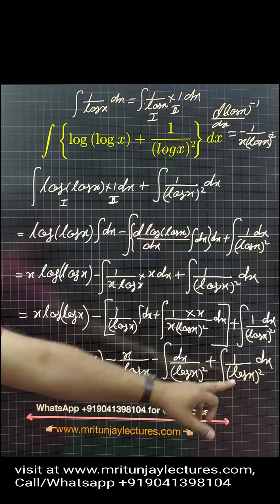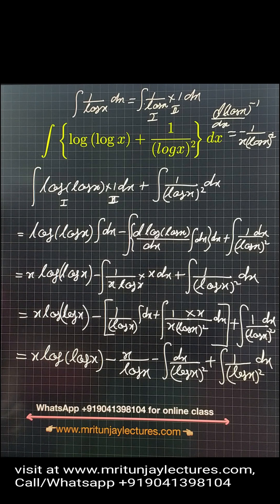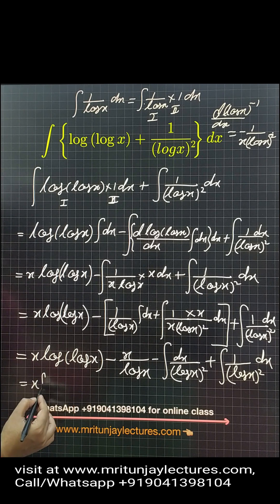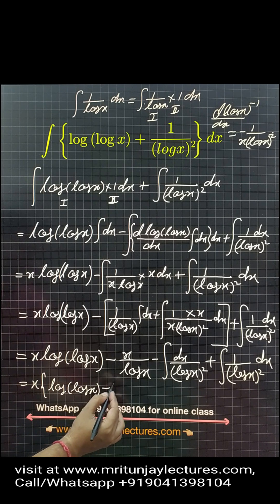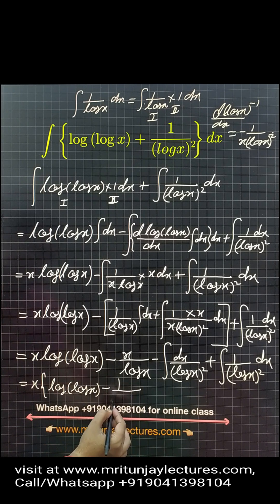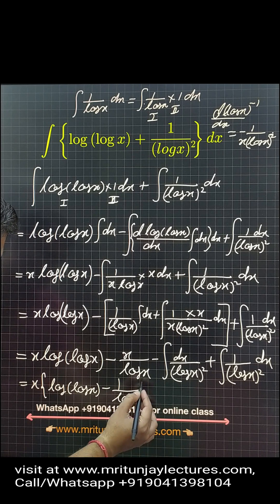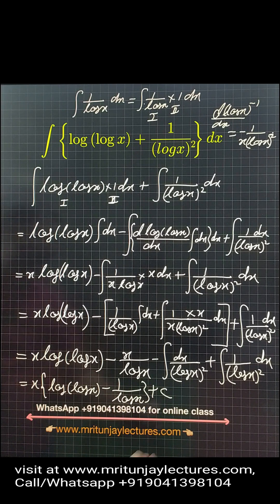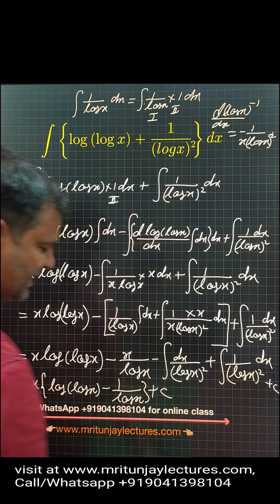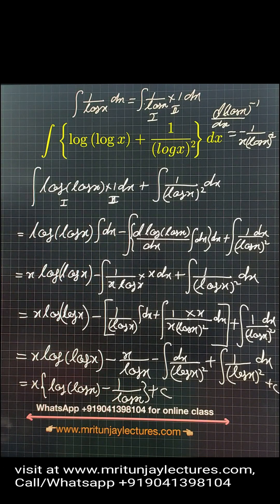That term and that term cancel out. So, the final answer, taking x as common, is x[log(log x) − 1/log x] + C.